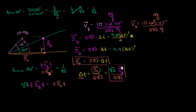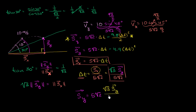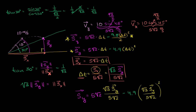Substituting into Δy = 5√2·Δt - 4.9·Δt²: the first term becomes 5√2 times (√3·Δy)/(5√2), which simplifies to √3·Δy. The second term becomes 4.9 times [(√3·Δy)/(5√2)]², which equals 4.9 times (3·Δy²) / (25×2) = 4.9 × 3·Δy² / 50. So we now have a quadratic equation in one variable.